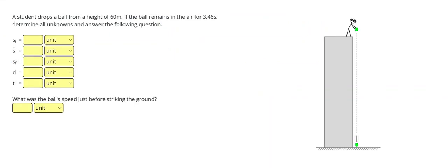Alright, let's go ahead and look at one more example problem. This one says a student drops the ball from a height of 60 meters. The ball remains in the air for 3.46 seconds. Determine all unknowns and answer the question. So again, looking for our three givens.